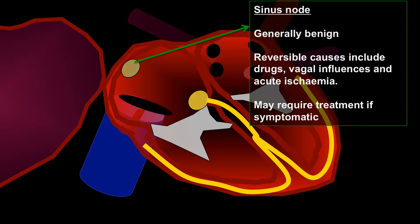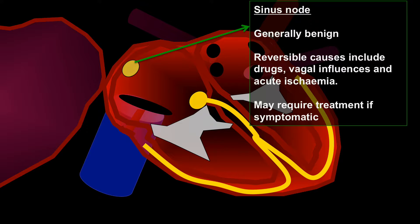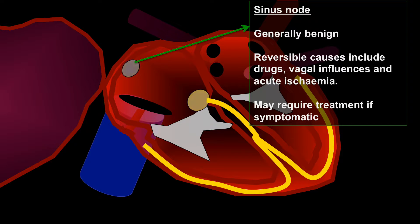Another example of sinus node disease would be somebody with chronotropic incompetence, i.e. their heart rate doesn't go up with exercise, and again this may respond well symptomatically to pacing but does not require emergency treatment.